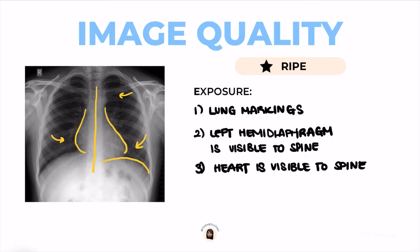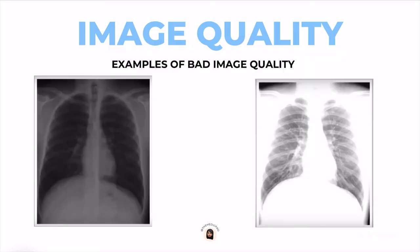Now that we've checked the image quality, we can move on to the x-ray interpretation. Here are two examples of what bad image quality looks like. The image on the left shows low exposure, and the image on the right shows high exposure. We can clearly see that you cannot differentiate the spine from behind the heart, and you can't even see the lung borders clearly.